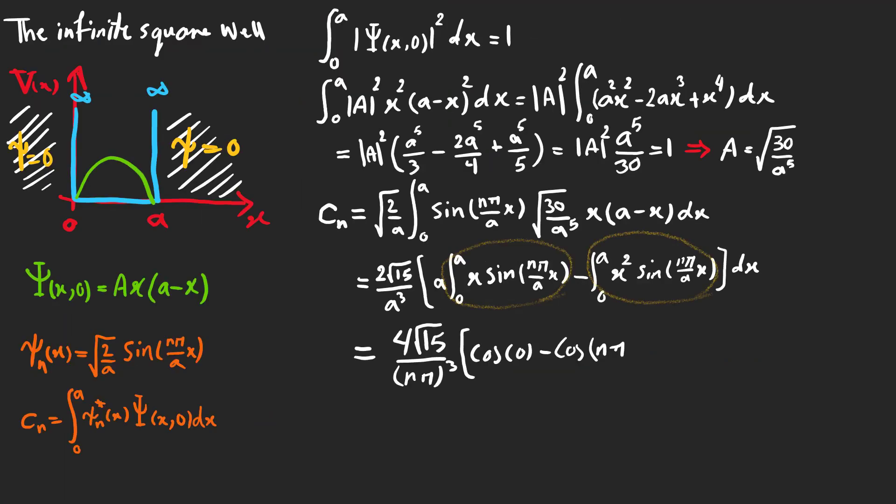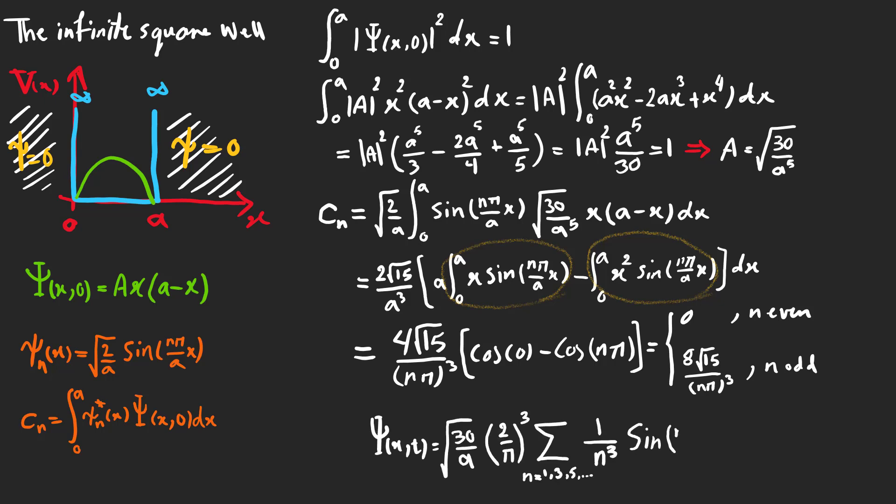We plug the answers into the last expression and it's clear that if n is even the coefficient is zero, and the wave function at time t is this.